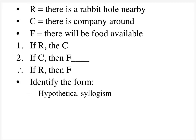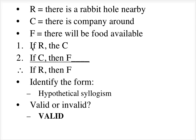This form is called a hypothetical syllogism, and this form is valid. We can see that if they all join together, it's sort of a transitive thing: if R, then C; if C, then F; therefore, if R, then F. We just stitch them together and skip over the C part. We don't know that there will be food available, but we do know that if there is a rabbit hole nearby, then there will be food there.